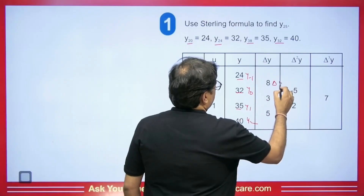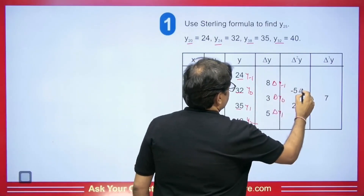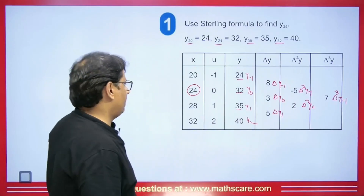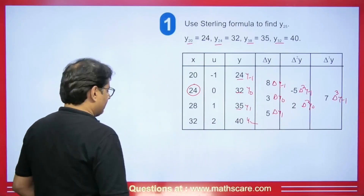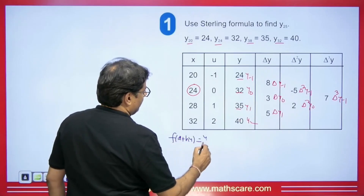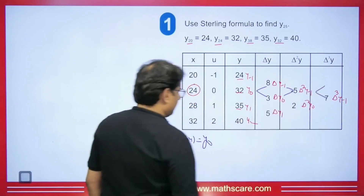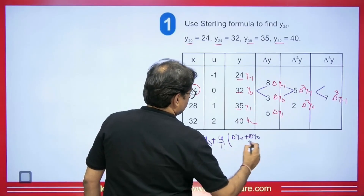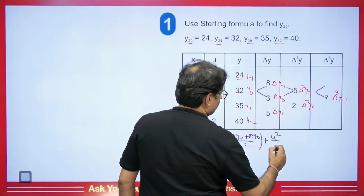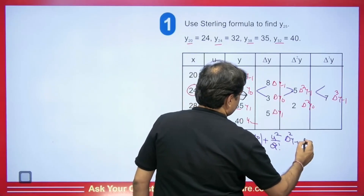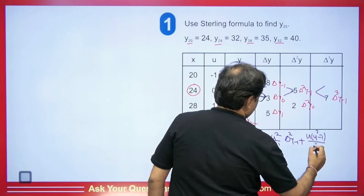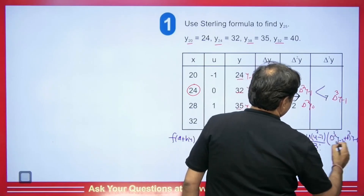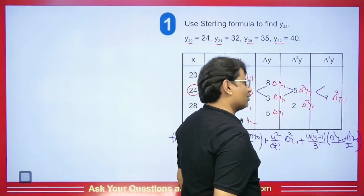We build the difference table. Differences give us Δy₋₁, Δy₀, Δy₁, then Δ²y₋₁, Δ²y₀, then Δ³y₋₁. The Sterling formula applies: F(a+hu) = y₀ + u/1! · [Δy₋₁ + Δy₀]/2 + u²/2! · Δ²y₋₁ + u(u²−1)/3! · [Δ³y₋₂ + Δ³y₋₁]/2. Since Δ³y₋₂ is not available in our table, we assume it to be 0.